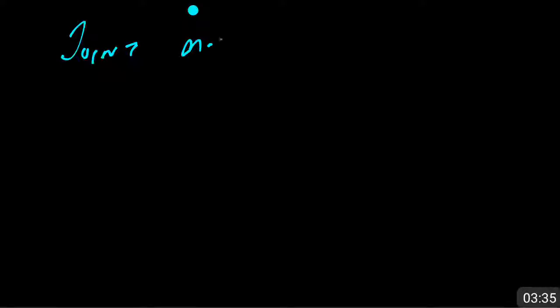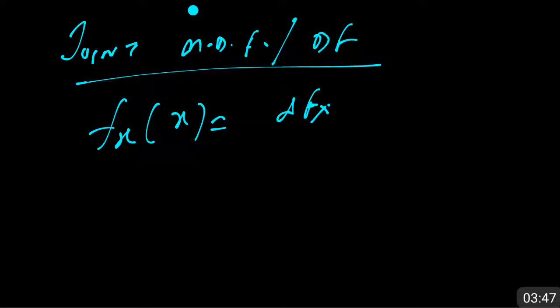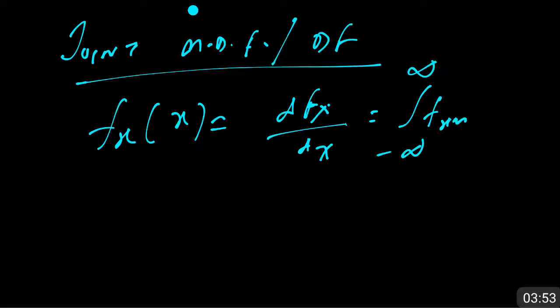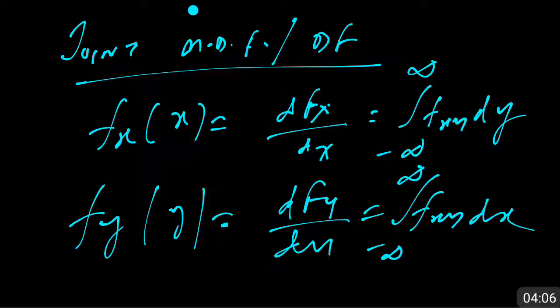For the joint marginal density function, we differentiate: f_X(x) is simply the derivative of F_X with respect to x, which equals the integration of f(x, y) dy. And f_Y(y) = d/dy of [integration from minus infinity to plus infinity of f(x, y) dx]. These are the two basic structures we follow to solve questions on marginal distribution functions.